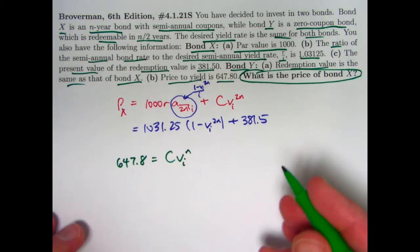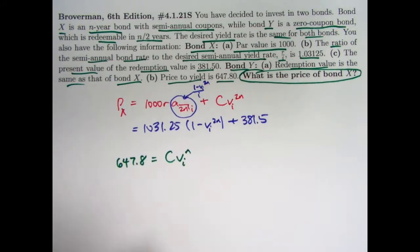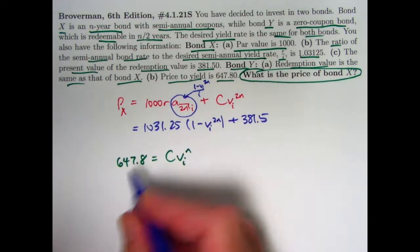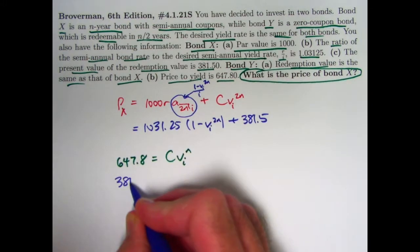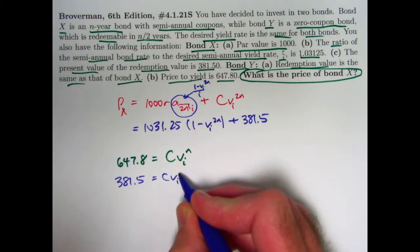All right, so let's see. Well, we could use the fact, one more fact here, that once again, we use the fact we've already used. Use the fact that this was equal to that. 381.5 was equal to C times V^I to the 2N.